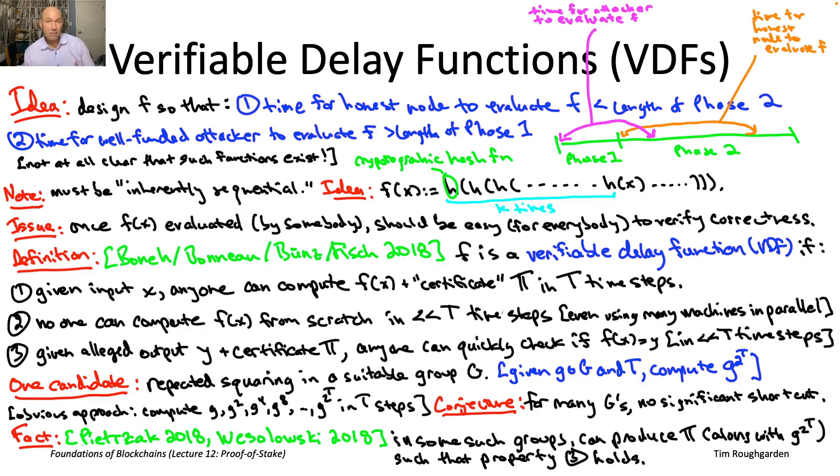But there are also groups, and now this next part is not conjecture. This next part really was proved by these researchers. Groups where property three does in fact hold.